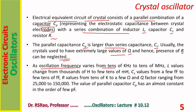As oscillation frequency varies from tens of kilohertz to tens of megahertz, L values range from thousands of henries to a few tens of millihenries. Cs values range from a few femtofarads to a few tens of femtofarads. R values range from tens of kilohms to a few kilohms. The Q factor ranges from 25,000 to 150,000, and the parallel capacitance Cp has an almost constant value in the order of a few picofarads.